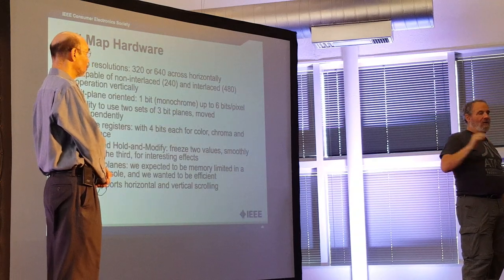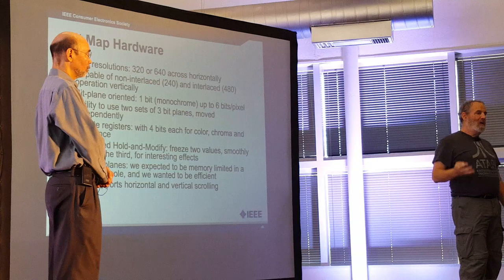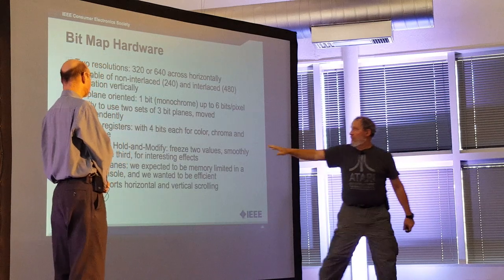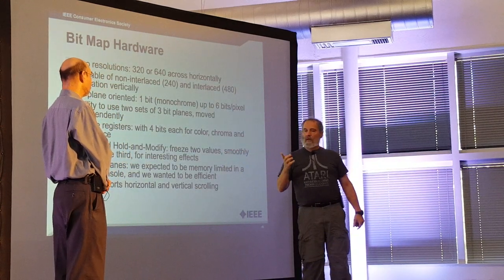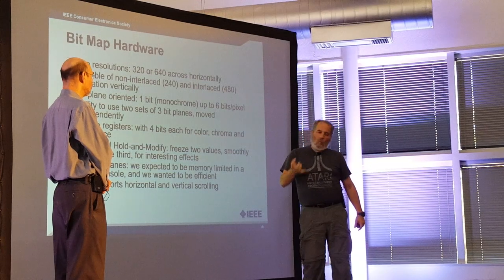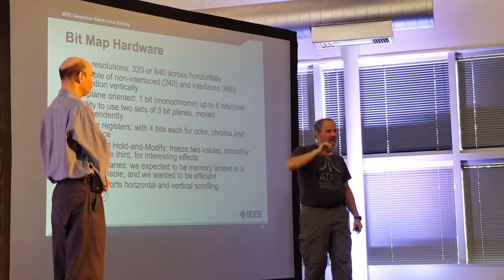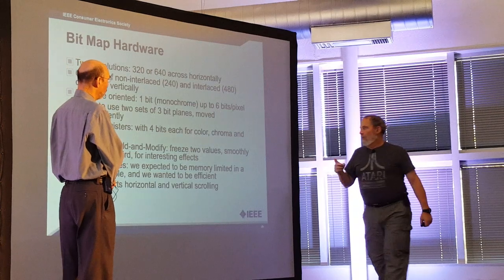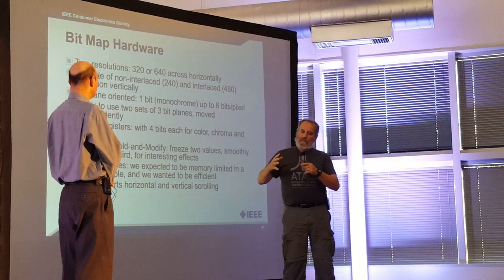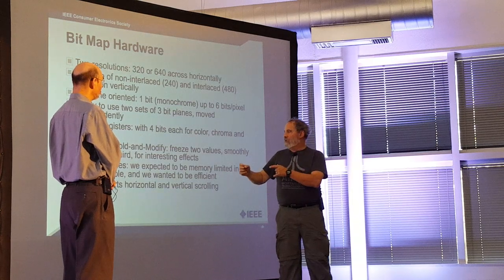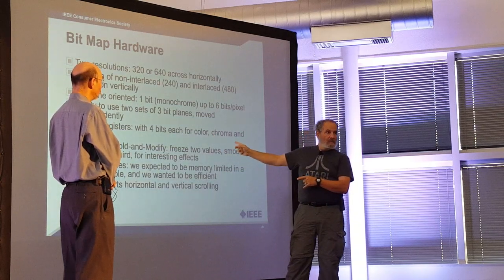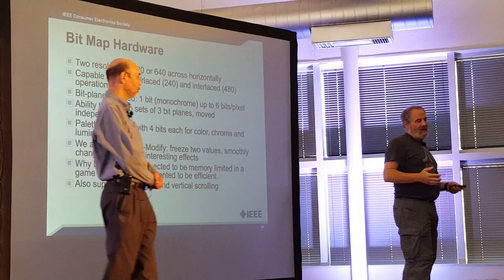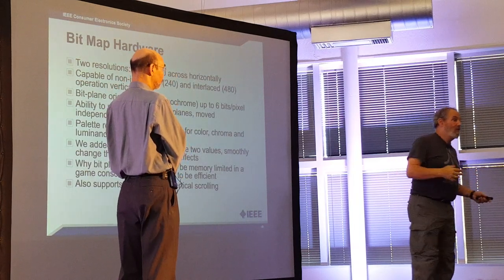Each of the 64 color values pointed to palette registers, each 12 bits wide — 4 bits for hue, 4 bits for chroma saturation, and 4 bits for luminance. We added an extra mode where if you've got a palette register active, you can hold two of those three values and smoothly modify the third one. This gave the Amiga shading effects you couldn't do with an ordinary personal computer or video game at all.